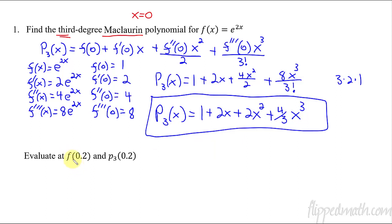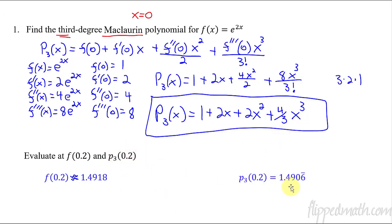What does this do for us? If we evaluate f of 0.2, we grab our calculator and plug that in — e to the 2 times 0.2 — and get approximately 1.4918. Our approximation polynomial with 0.2 gives 1.4906. Those are pretty close — you've got to go out to the hundred-thousandths place before you're off by just one thousandth. That's a good approximation! And we could keep going: instead of third degree, do fourth degree — even better approximation. A fifth degree would be better still. You just keep going and it starts to match the graph.